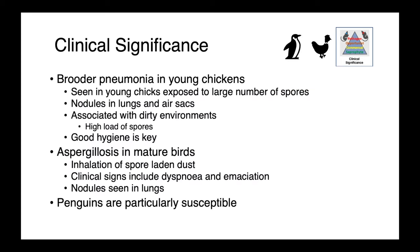Brooder pneumonia is seen most commonly in young chickens exposed to a large number of spores. It's associated with dirty environments and a high environmental load, and we can see outbreaks involving multiple animals. Grossly, we see nodules in the lungs and air sacs — foci of granulomatous inflammation. Because it is associated with dirty environments, good hygiene in the barn is key.